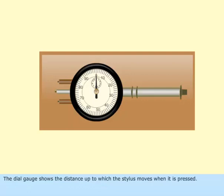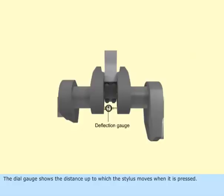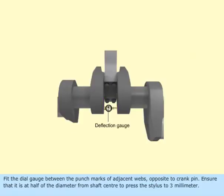The dial gauge shows the distance up to which the stylus moves when it is pressed. Fit the dial gauge between the punch marks of adjacent webs opposite to crank pin. Ensure that it is at half of the diameter from shaft center to press the stylus to 3 mm.